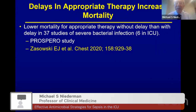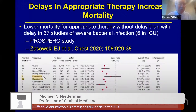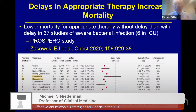There is lower mortality with appropriate therapy without delay. In the Prospero study, this was particularly true with severe bacterial infection; six of the 37 studies in this analysis were in ICU patients. We do not want delays — we want to favor early therapy, particularly for pneumonia, bacteremia, and patients in the ICU. The basic principle is to anticipate the likely etiologic pathogens and site of infection, know your local microbiology, choose therapy correctly, and initiate it immediately to reduce mortality.